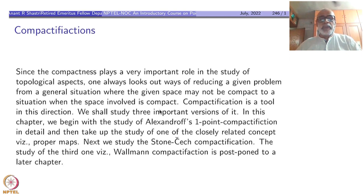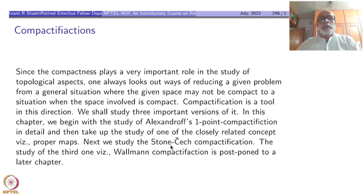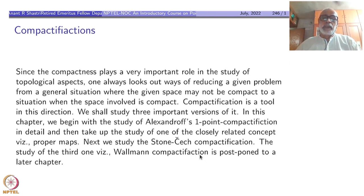In this chapter, we begin with the study of Alexandrov's one-point compactification in full detail. Then we take up one of the closely related concepts, namely proper maps. After that, we will study Stone-Čech compactification. The third one I mentioned, which is Wallman compactification, will be later on — it will not be taken in this chapter because that requires some other notions to be developed.